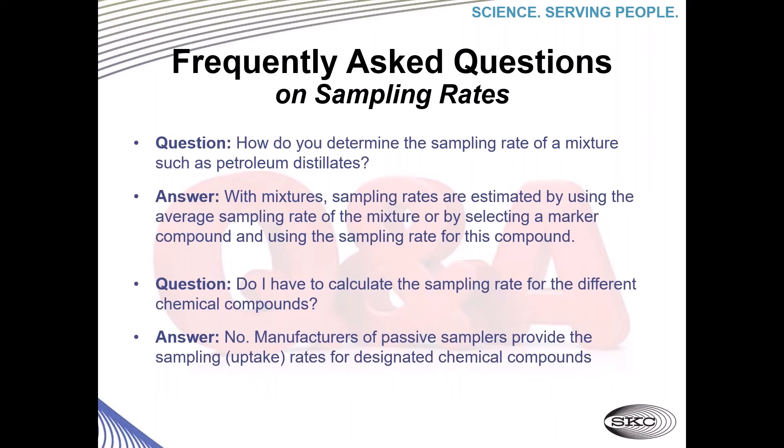How do you determine the sampling rate of a mixture such as petroleum distillates? With mixtures, sampling rates are estimated by using the average sampling rate of the mixture or by selecting a marker compound and using the sampling rate for that compound. It is definitely not as black and white as a specific compound, but it can be done and is done effectively.